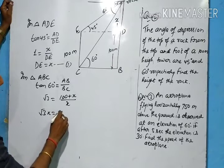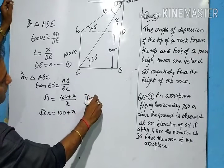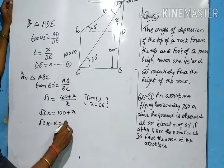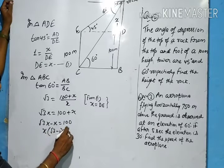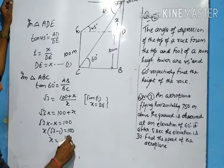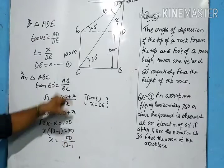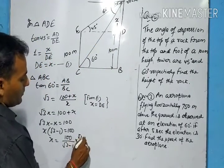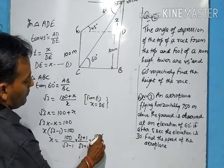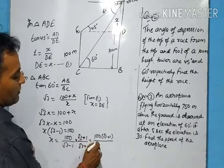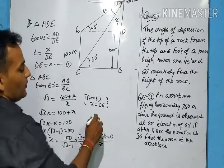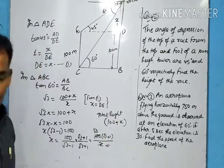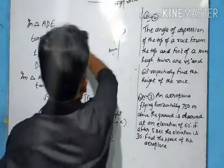Cross-multiplying: √3·x = 100 + x. So √3·x − x = 100, giving x(√3 − 1) = 100, and x = 100/(√3 − 1). Rationalizing by multiplying by (√3 + 1)/(√3 + 1): x = 100(√3 + 1)/(3 − 1) = 100(√3 + 1)/2 = 50(√3 + 1). The total height of the rock is 100 + x, and we substitute the value of x to get the final answer.